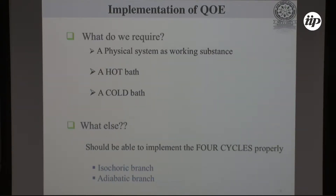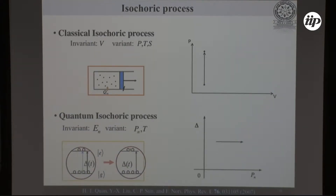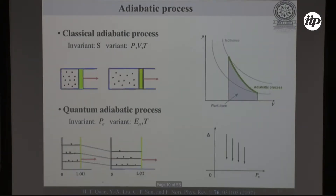To implement a quantum Otto cycle we require a hot bath, a cold bath, and a physical system, and we must properly implement the quantum isochoric and quantum adiabatic branches. In the quantum isochoric process, similar to the classical case, the system equilibrates with the thermal environment, exchanging heat but no work. In the quantum adiabatic process, the process is very slow so the system remains in its initial eigenstate — the occupation probability does not change, but work is done due to the changing energy eigenstructure, with no heat exchanged.